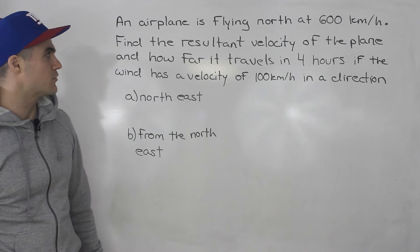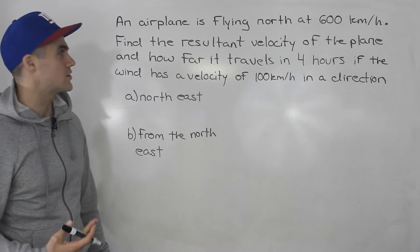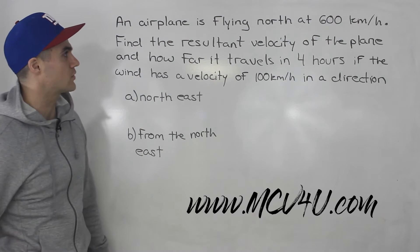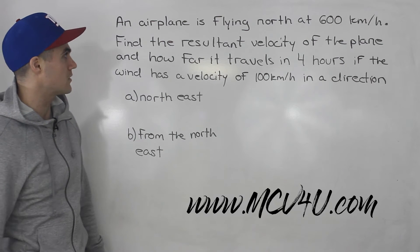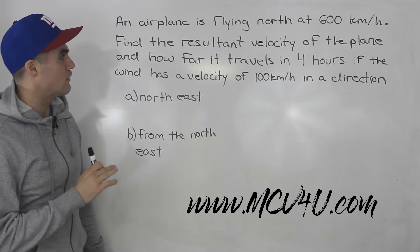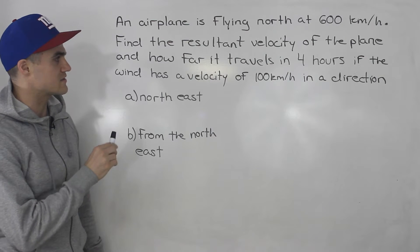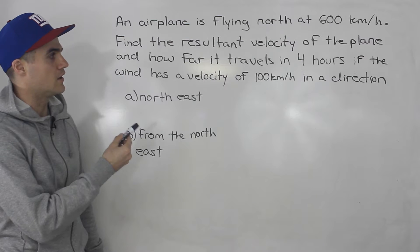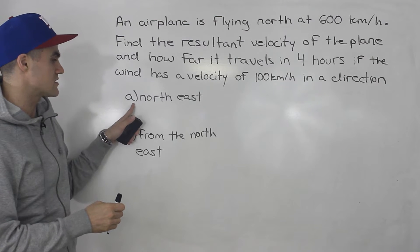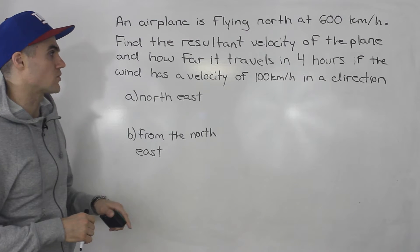Welcome back everybody, Patrick here. Moving on to the next question, another velocity question. An airplane is flying north at 600 kilometers per hour. Find the resultant velocity of the plane and how far it travels in four hours if the wind has a velocity of 100 kilometers per hour in a direction of either northeast or coming from the northeast.